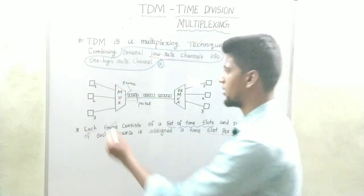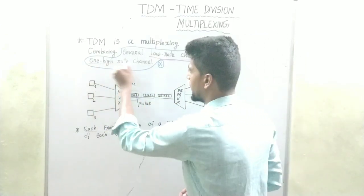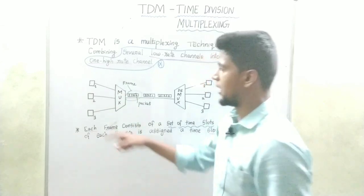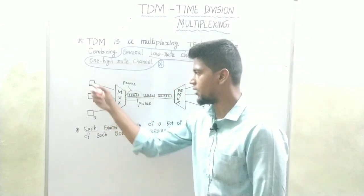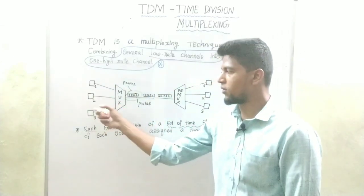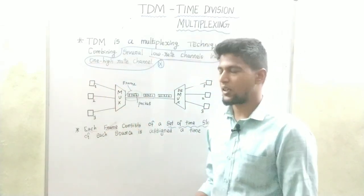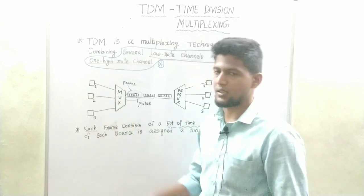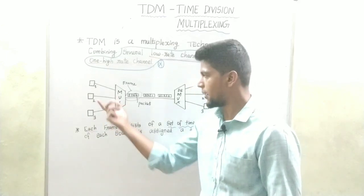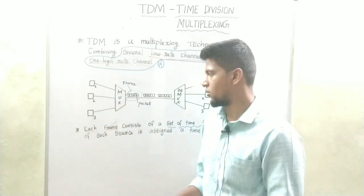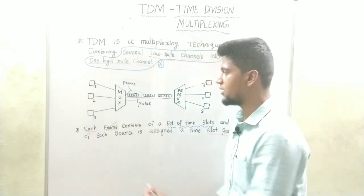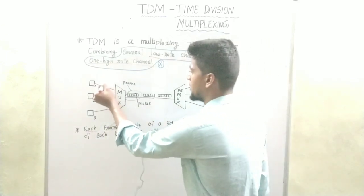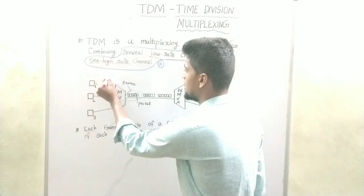If you look at this figure, there are 3 nodes. It may be a machine or a system — it may be a device. Each device sends signals.